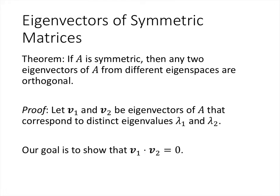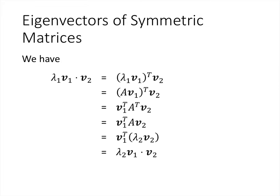In the proof, we suppose that we have two eigenvectors for two distinct eigenvalues lambda 1 and lambda 2, and our goal is to show that the vectors v1 and v2 are orthogonal. The key here is that we're going to use the alternate formulation of dot product — when we have two vectors u and v, one way to represent u dot v is as u transpose times v, thinking of it as matrix multiplication giving a 1 by 1 matrix, which we treat as a scalar.